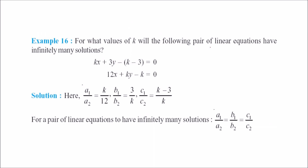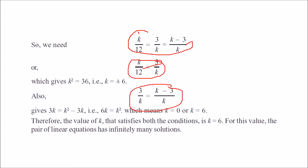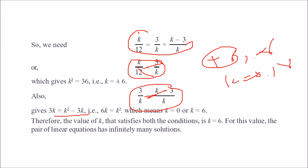For what value of k does the following pair of equations have infinitely many solutions? For infinitely many solutions, a1/a2 must equal b1/b2 must equal c1/c2. Placing the values gives k² equals 36, so k equals plus or minus 6 from the first ratio. From the second ratio, k equals 0 or 6. Combining both, k equals 6 gives infinitely many solutions.